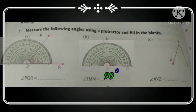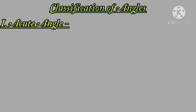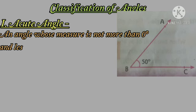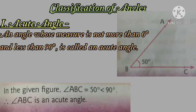So this is the way to measure the angle with the help of protractor. I hope you all have understood. Now next topic: Classification of Angles. First, acute angle. What is acute angle? An angle whose measure is not more than zero degrees and less than 90 degrees is called an acute angle. You can see the figure. In the given figure, angle ABC is 50 degrees, so it is an acute angle because it is less than 90 degrees.